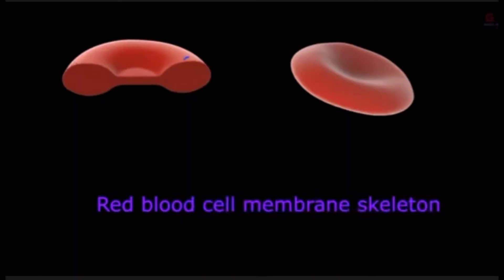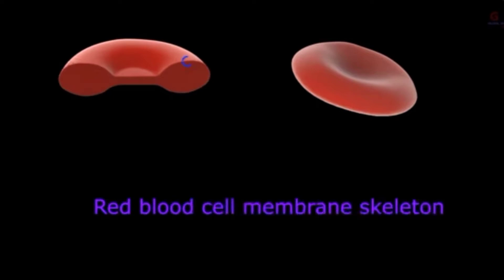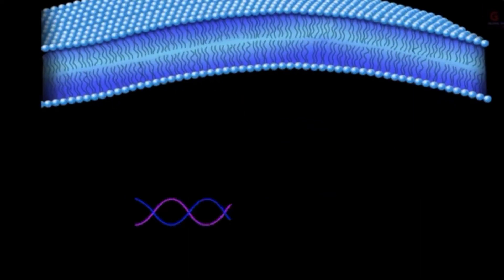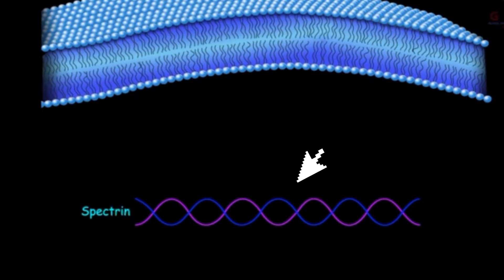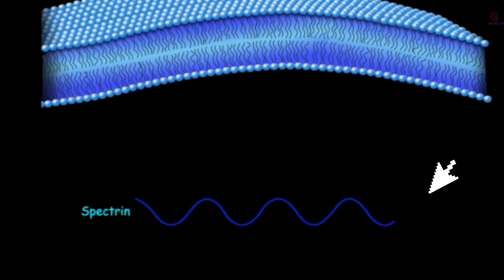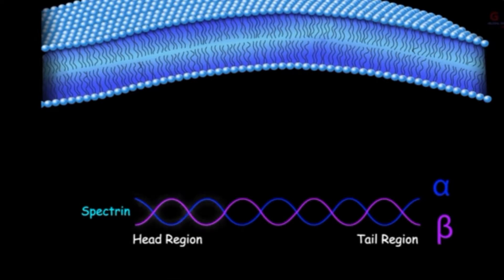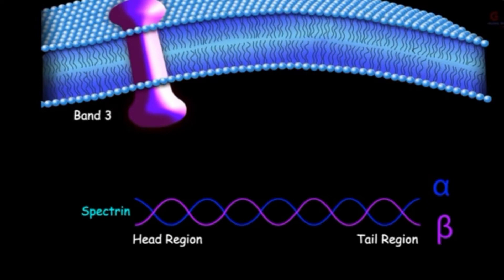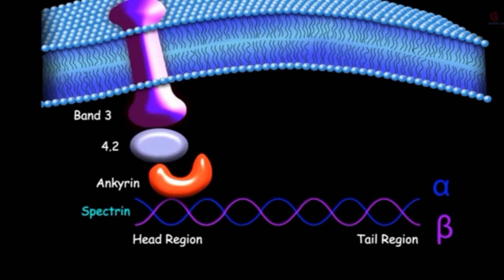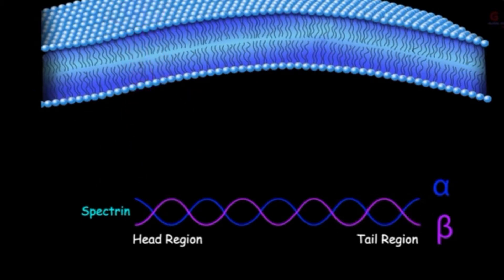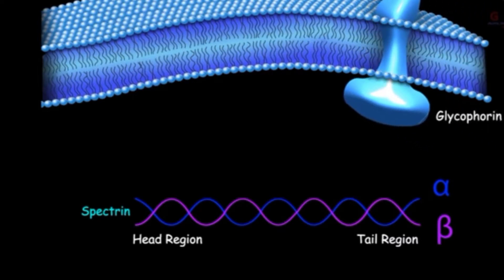Before going to the pathogenesis of hereditary spherocytosis, we should know the skeleton of the red blood cell membrane. Normally, RBC membrane consists of a protein known as spectrin, which has two subunits: alpha and beta. Spectrin is attached to the cell membrane at two different sites — the head region and the tail region. In the head region, spectrin binds to band 3 of the membrane with the help of ankyrin and band 4.2, whereas in the tail region, spectrin binds to glycophorin A, which is present in the membrane with the help of protein 4.1 and actin.